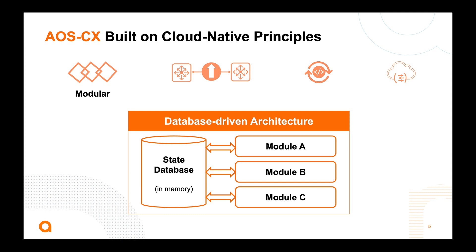By the way, the database is a data structure that exists in memory, so accessing it is extremely fast. This takes us to our next principle, resiliency. In a database-driven architecture, as long as the data exists in the database, the state of the module that produces the information does not affect the state of the others. In an extreme example, an AOS CX module can be restarted without affecting the rest of the system. This is different from legacy operating systems, in which a single failure triggers a full reboot, rendering the whole system unavailable for at least several minutes.